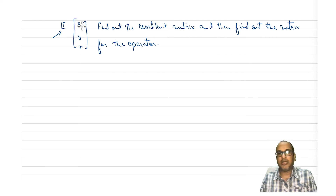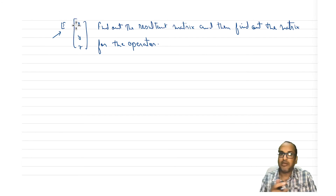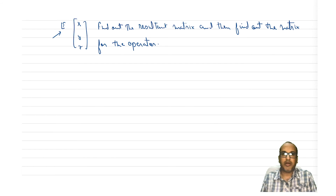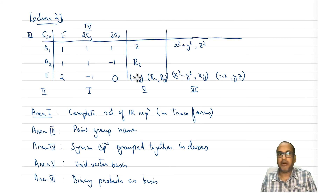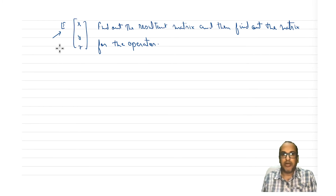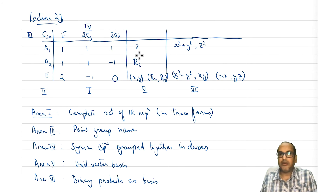The point to remember is that to start with, we don't know whether a particular representation would be one-dimensional or two-dimensional, or whether it will be degenerate with respect to X and Y, or X and Z, or Y and Z. That's why we generally take X, Y, Z together and then reduce it. Then we see which two vectors go together and which particular basis set goes separately. For example, in this case we see that X and Y are not separable, so X and Y form a 2×2 matrix corresponding to this, and Z will be a 1×1 matrix.